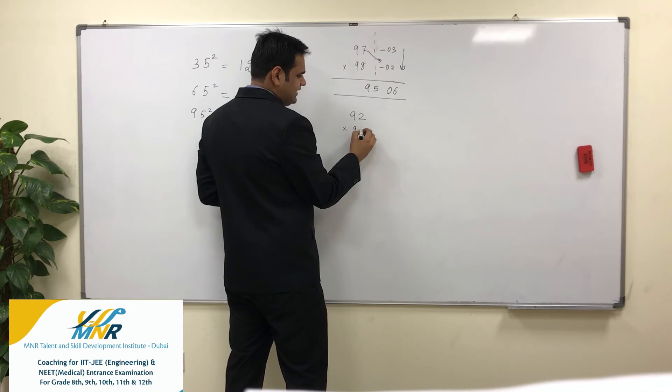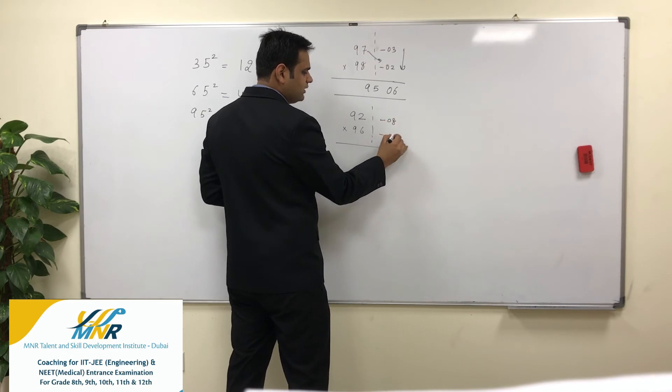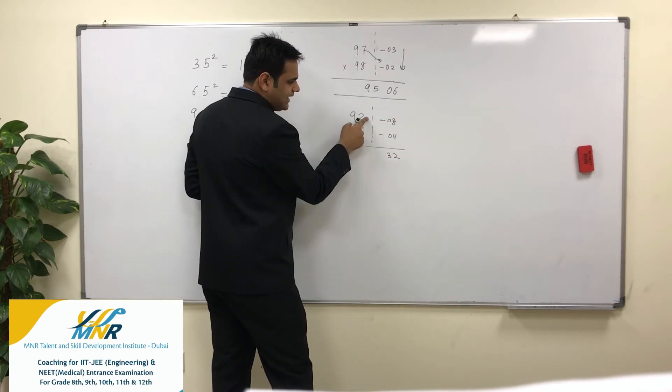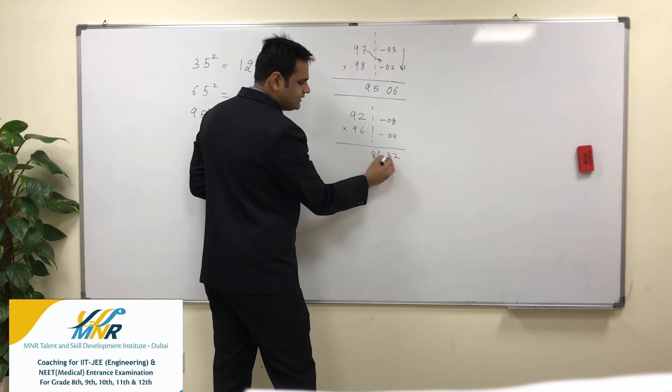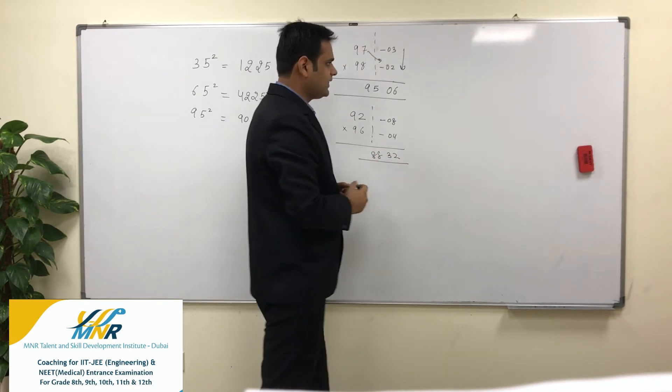Minus 6, so it is 8 and this is 4. 4 into 8 is 32, and 92 minus 4 will be nothing but 88.